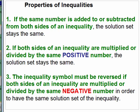Let's summarize the properties of inequalities. First, if the same number is added to or subtracted from both sides of an inequality, the solution set stays the same. Second, if both sides of an inequality are multiplied or divided by the same positive number, the solution set stays the same. Both of these are similar to the properties of equalities. However, property 2 specifically says positive number — and property 3 states that the inequality symbol must be reversed if both sides are multiplied or divided by the same negative number in order to preserve the same solution set.